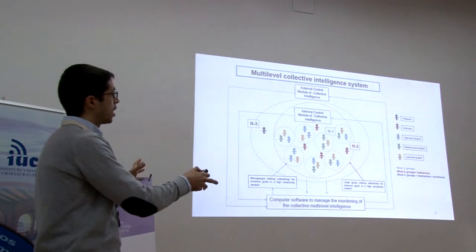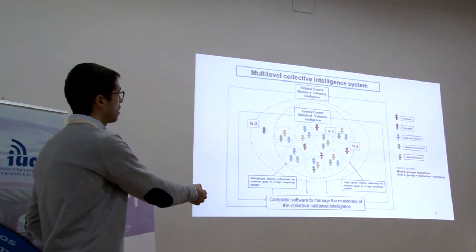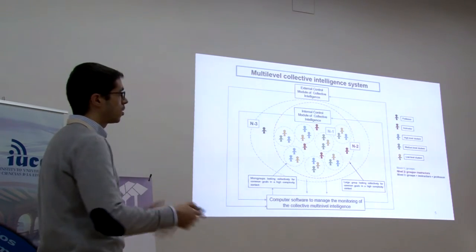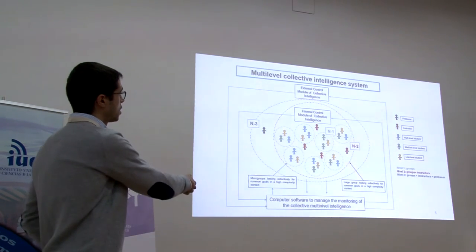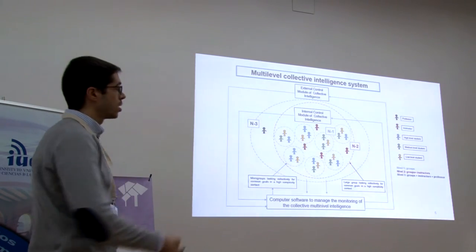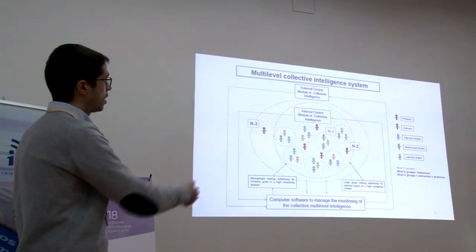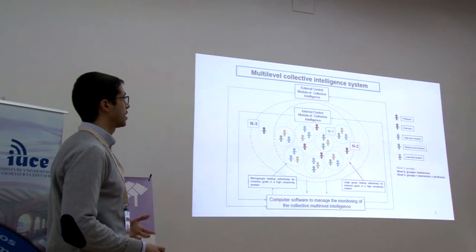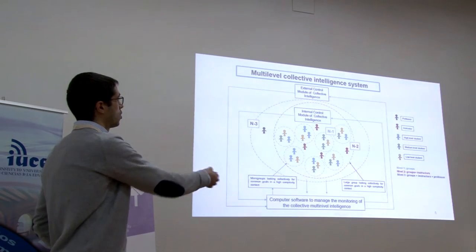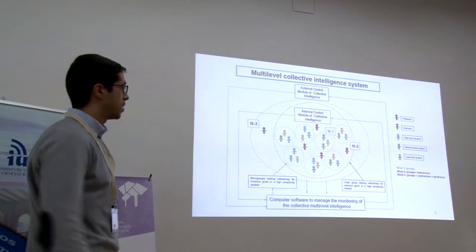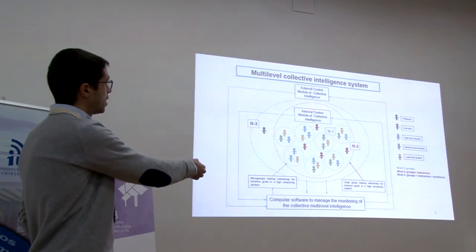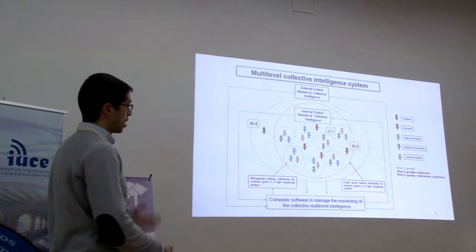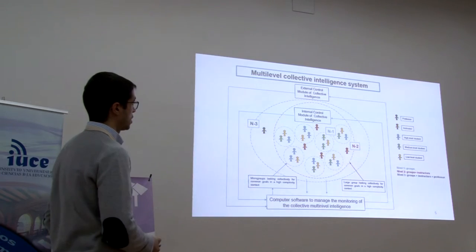We structure our classroom in three layers. The first layer is made by groups of students — the different colors mean different levels of knowledge, and these groups should be heterogeneous. The second level is made by instructors: students who have already passed the subject and can help the new students. The third layer, of course, is formed by the professors. We have two modules of control, an internal and external module, and everything is managed through a self-made software.